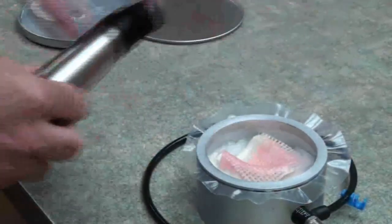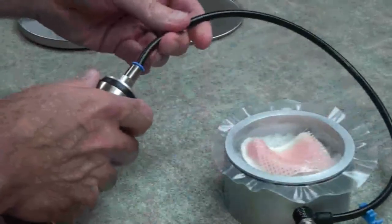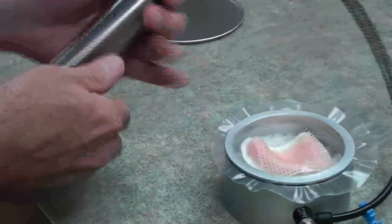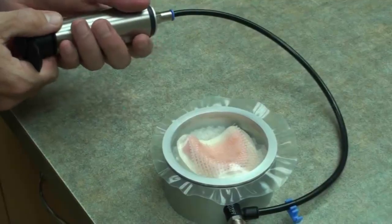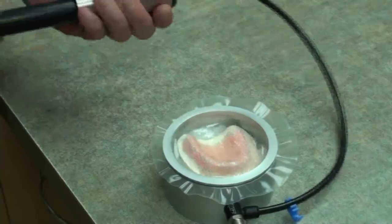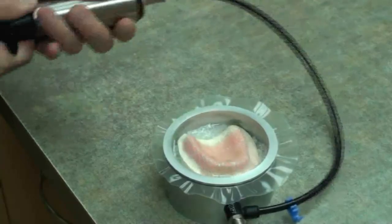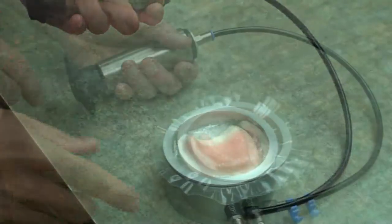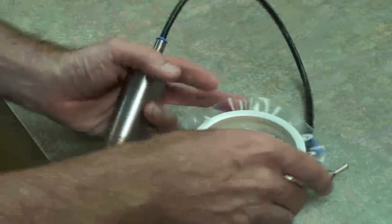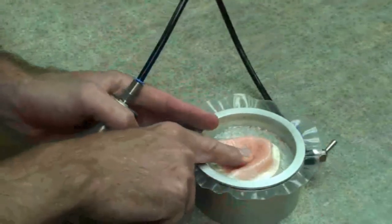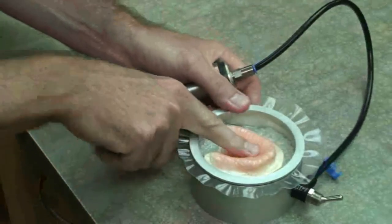Attach the manual hand pump to the tubing. Activate the pump to remove the air from the chamber and draw the gasket perfectly into place over the model.